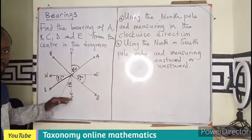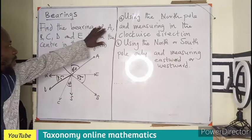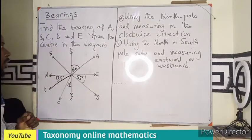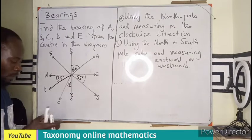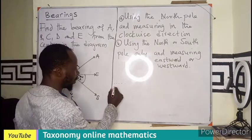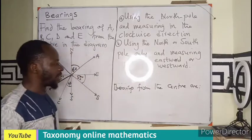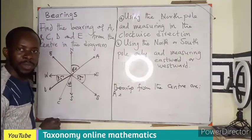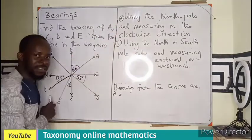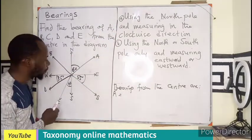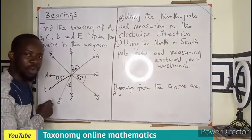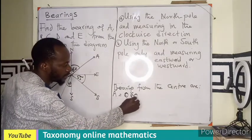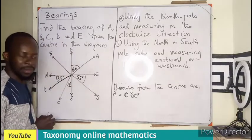Let's take a question. Find the bearing of points A, B, C, D, and E from the center in the diagram. We are asked to find the bearing from the center. Taking the first point A, measuring from the north down to point A gives us 060 degrees.